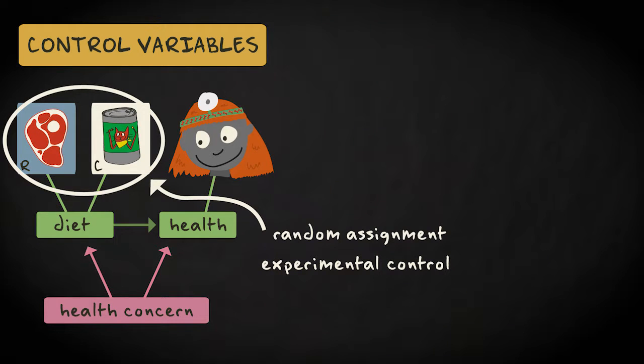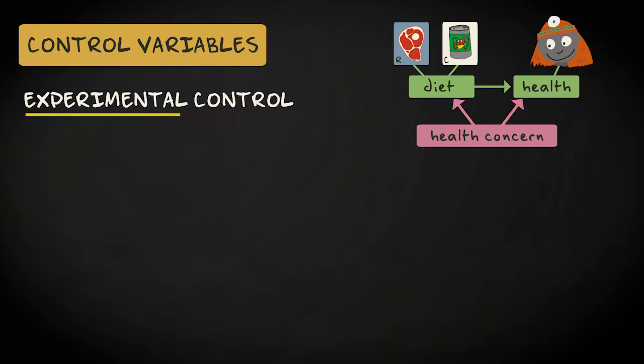Another solution is to assign cats to the diets randomly, relying on randomization to eliminate any relation between diet and health concern. One of the goals in experiments, especially lab experiments, is to eliminate as many potential confounders as possible by using randomization and keeping extraneous variables constant. Of course, we're not always able to control variables experimentally.